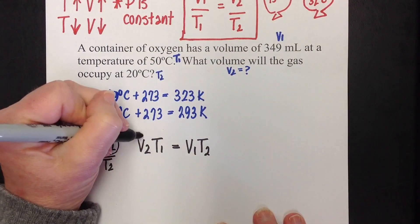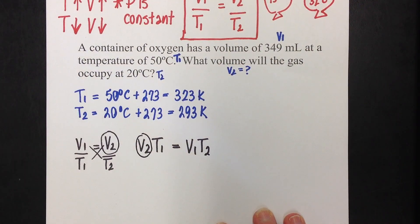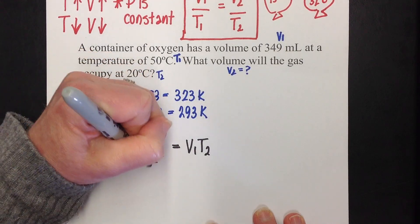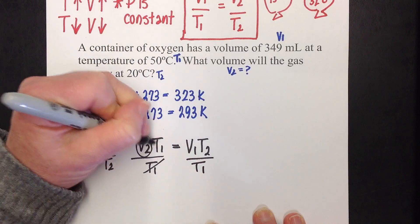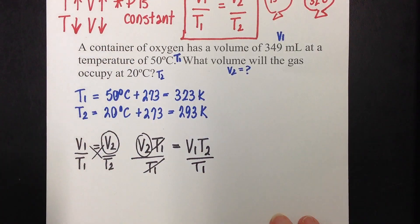Now, I'm not quite done because I'm still trying to isolate that V2. I can see now that it's on one line. I can just divide both sides by T1. T1's cancel. So, here's my formula.